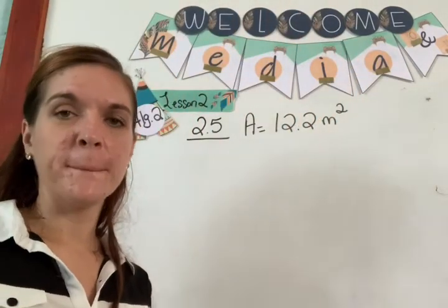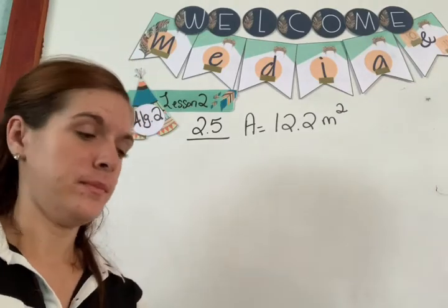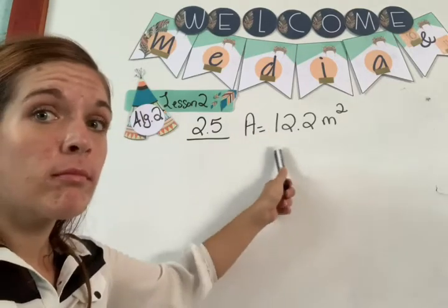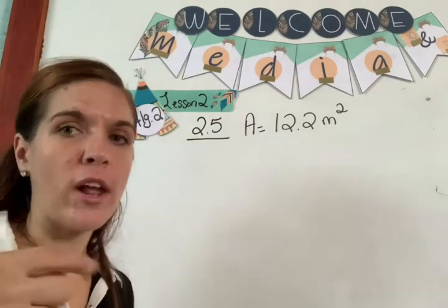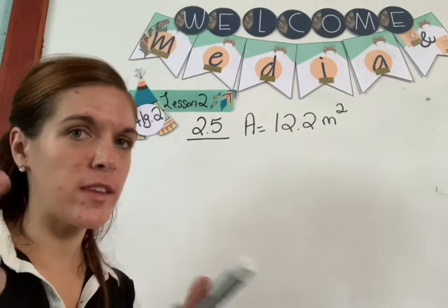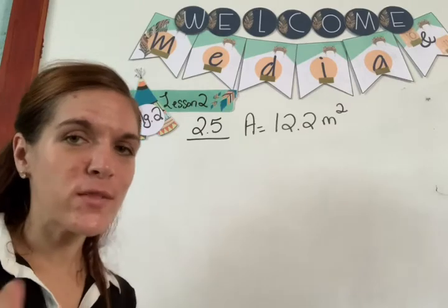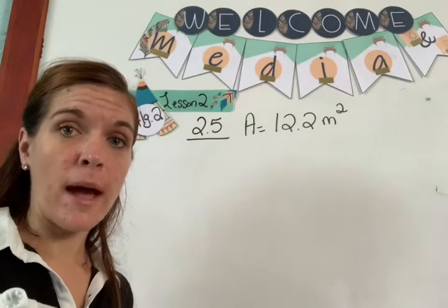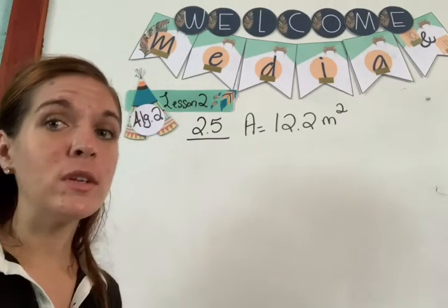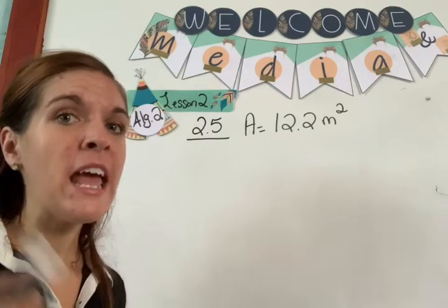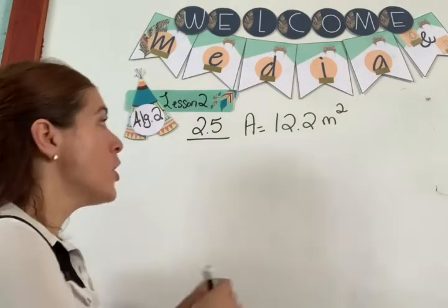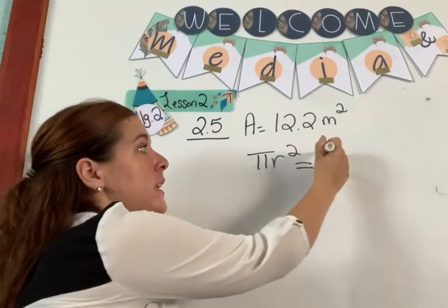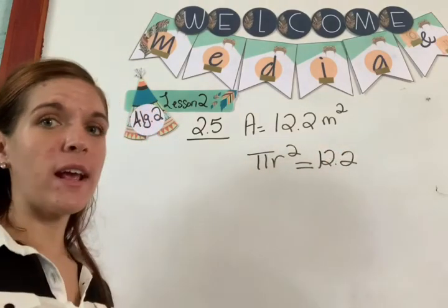Obey me on this one. Whenever you see something like this — the area of the circle is given — the first thing you do: write the formula. What's the first thing you do? Write the formula. As soon as you see they are talking about a formula like area of a circle and they give you the answer, you need to write that formula because you're about to have to solve for something to help you answer the question. So write the formula: pi r squared equals 12.2.